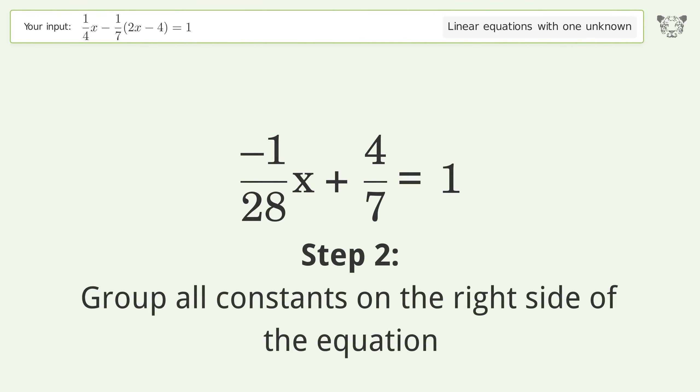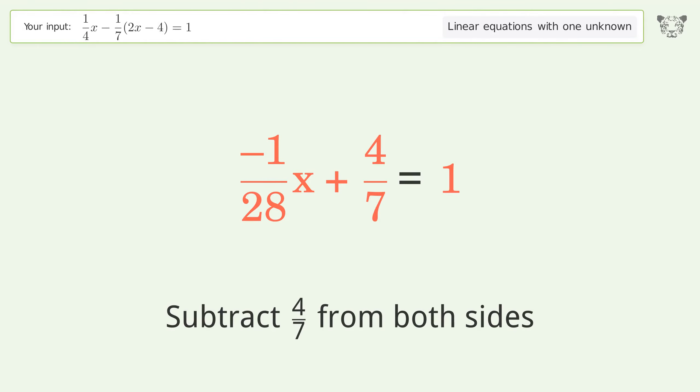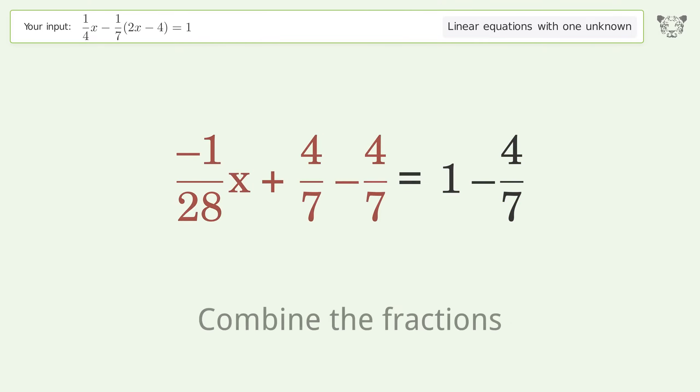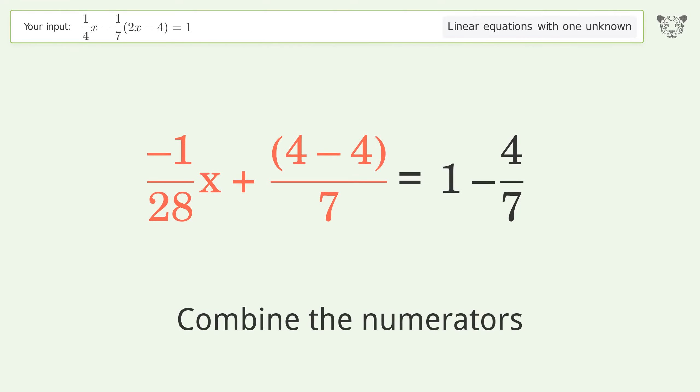Group all constants on the right side of the equation. Subtract 4 over 7 from both sides, combine the fractions, and combine the numerators.